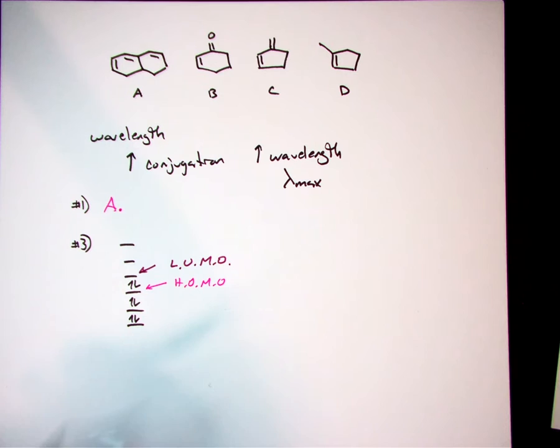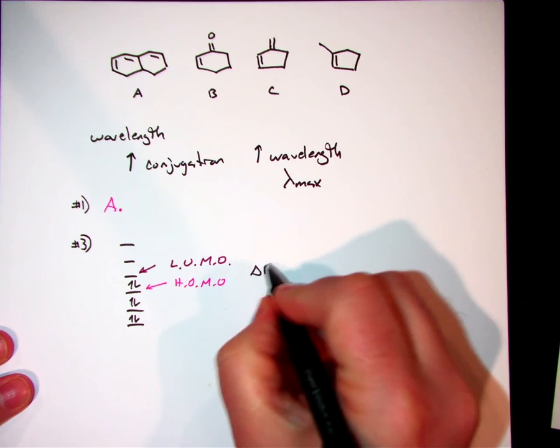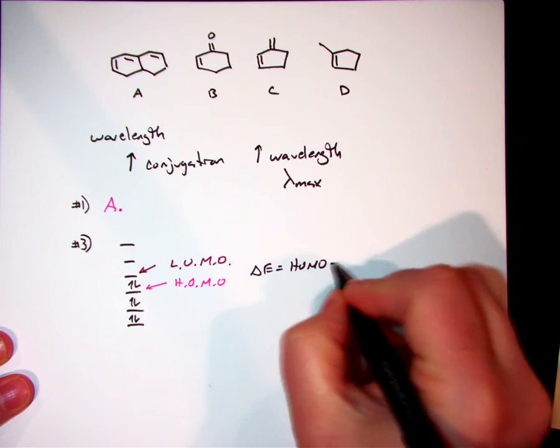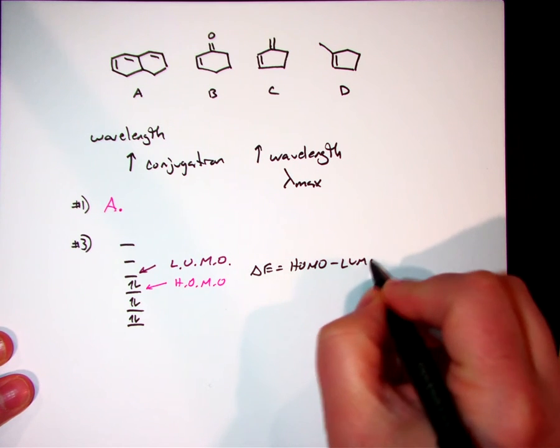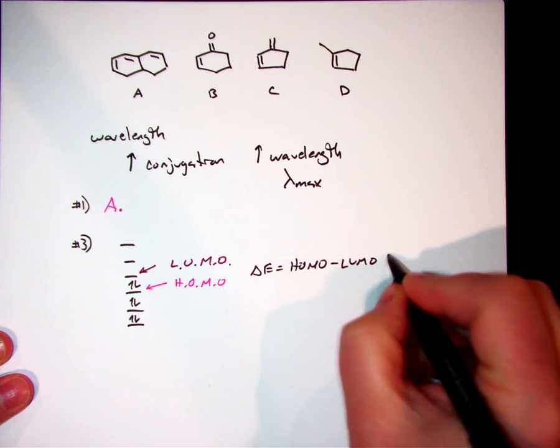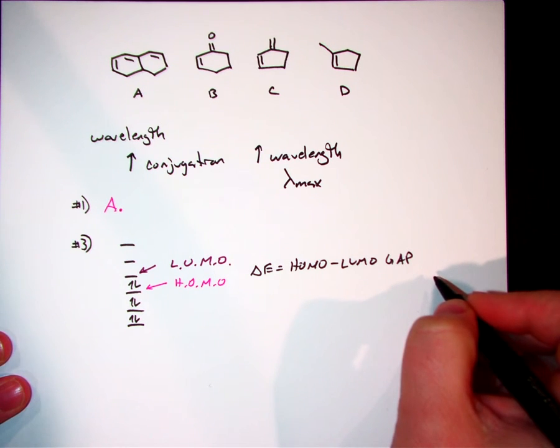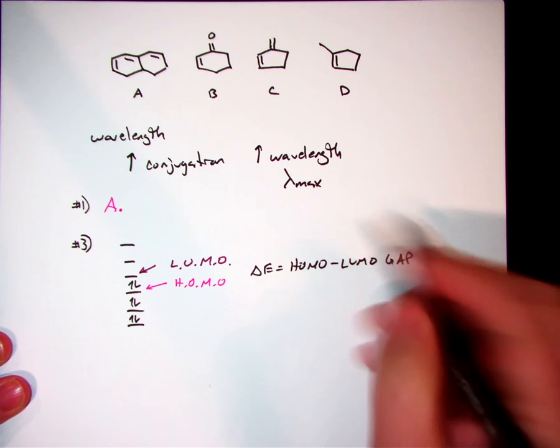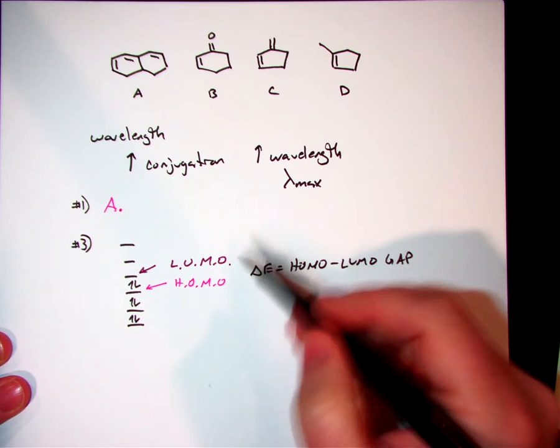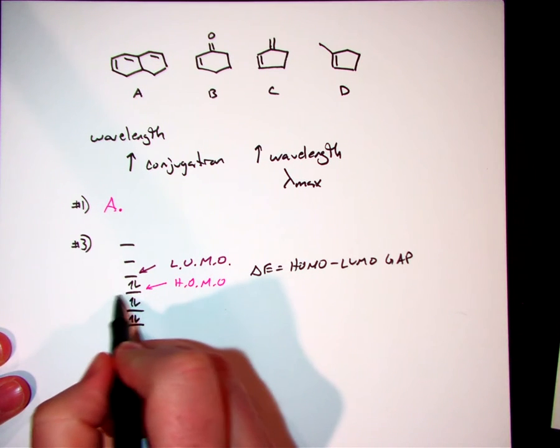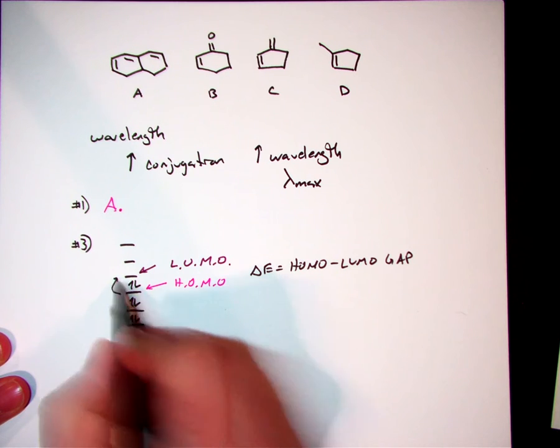So the energy transition that we're looking at, that delta E, that HOMO-LUMO difference, or what we call the HOMO-LUMO gap, that's the energy we're measuring on our UV spectrometry. That could be the lambda max value, definitely one of those values that we're measuring, is how much energy does it take to take an electron from here and promote it up to there.